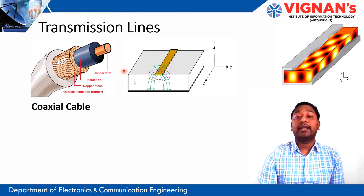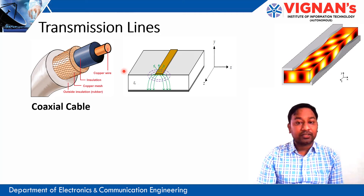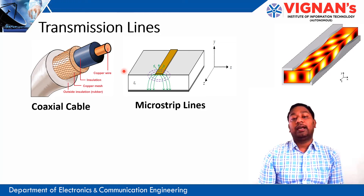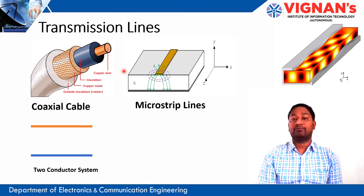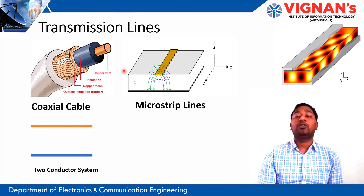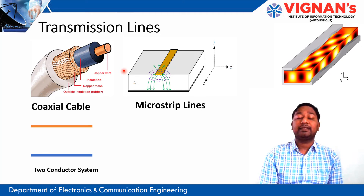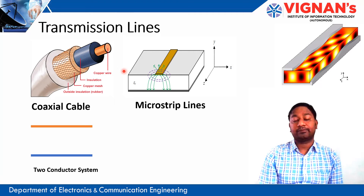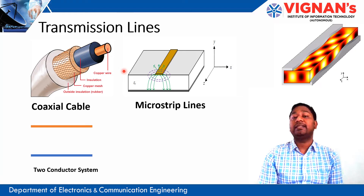Another type of transmission line is the microstrip line, which is used for different applications like antenna design. Microstrip lines are very useful but also work only up to 10 GHz. There are also parallel-wire guides and other transmission lines, but basically all transmission lines are two-conductor systems — one outer and one inner conductor. As frequency increases, external electric field interference between the two conductors decreases the bandwidth of the transmission line.